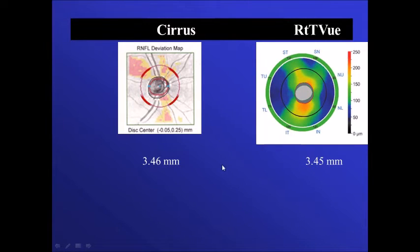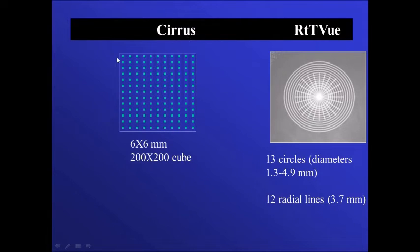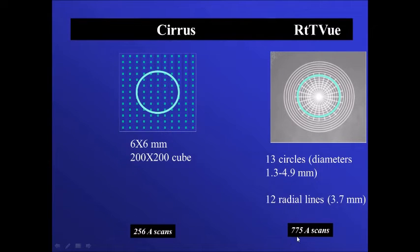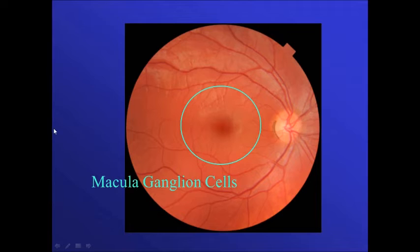In the Cirrus, the ring diameter and the technique differ from the Optovue. In the Cirrus we get a 200 by 200 examination; in the Optovue, the machine tests 13 circles with diameters starting from 1.3 up to 4.9 millimeters, centered with 12 radial lines each extending 3.7 millimeters. In the Cirrus there are 256 A-scans per circle, while in the Optovue there are 775 A-scans. Again, you cannot compare results of different machines.